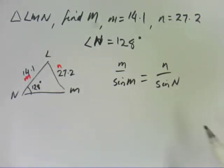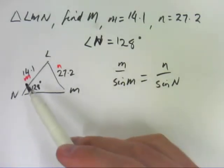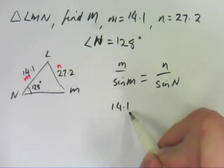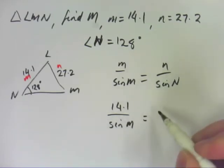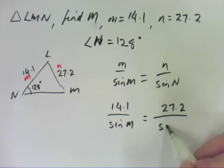So let's start with M over sine M equals N over sine N. It's the same rule, same ratios, same everything. All we're using is different letters, which is perfectly reasonable to do if this question gives you different letters to work from. So let's pull in our numbers. 14.1 divided by sine M, because we don't know M, or angle M, equals 27.2 divided by sine of 128.